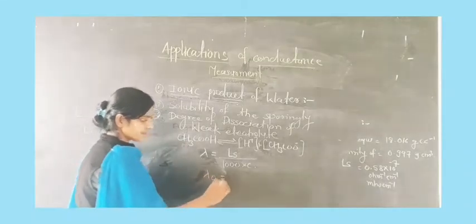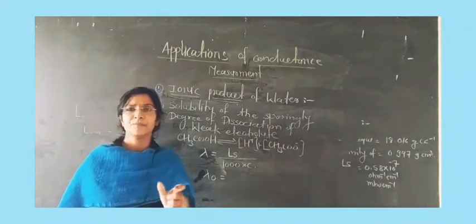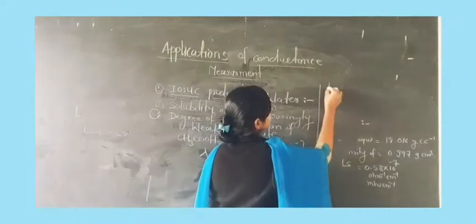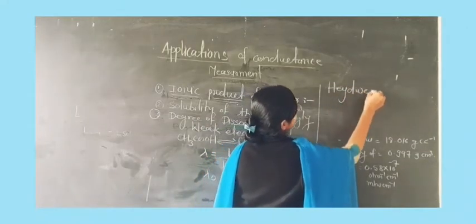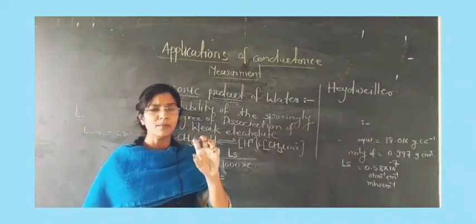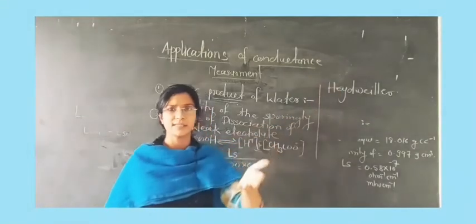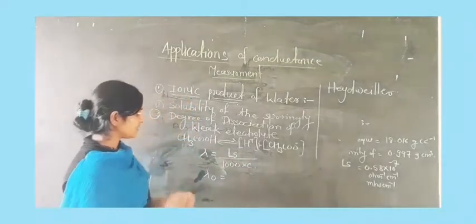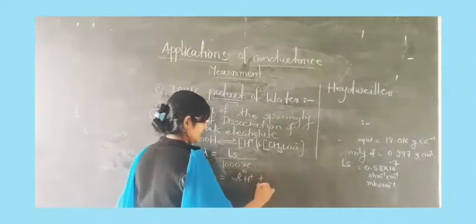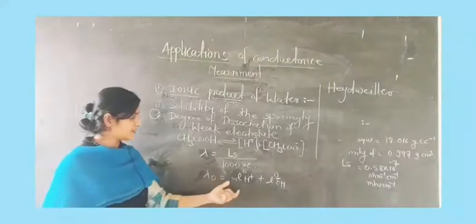The second value needed is lambda_0. To find lambda_0, we use Kohlrausch's data and Hittorf's data, which provide important information regarding the equivalent conductance of ions at infinite dilution. From that data, we take the ionic conductance values of H⁺ and OH⁻ ions, substitute them, and get the particular value of lambda_0.